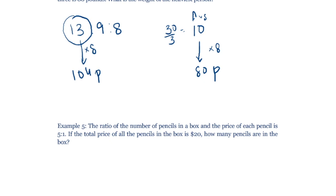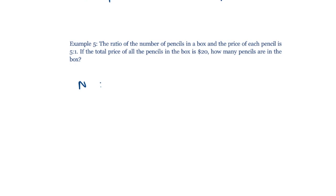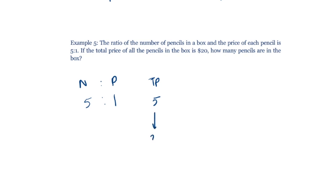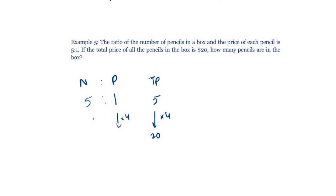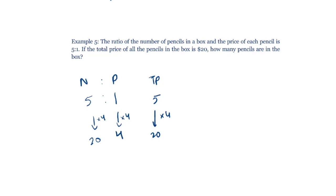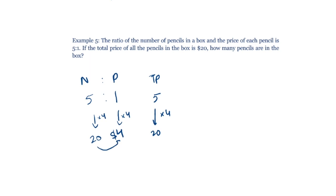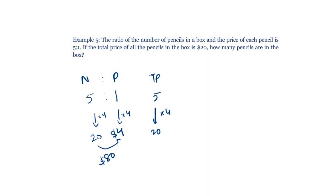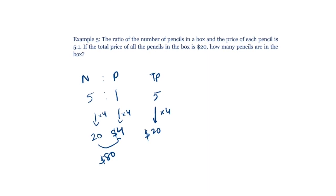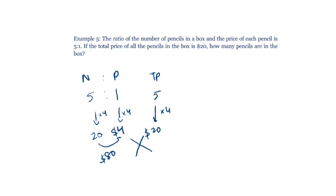New example: the ratio of the number of pencils in a box to the price of each pencil is 5 to 1. The total price of all pencils is $20. The total price in ratio terms is the number of pencils times the price per pencil, which is 5. It seems the multiplier is 4, giving 20 pencils at $4 each — but 20 times $4 is $80, not $20. So something is wrong.